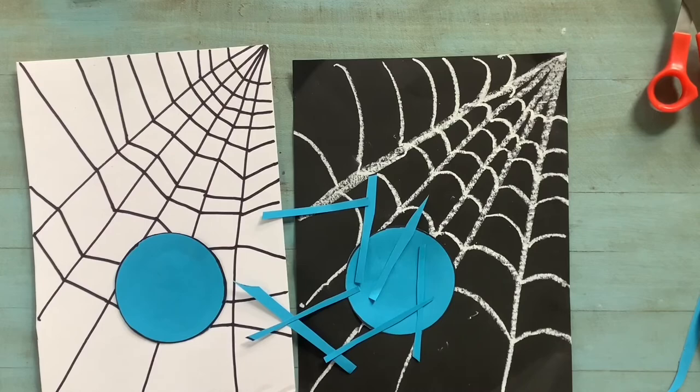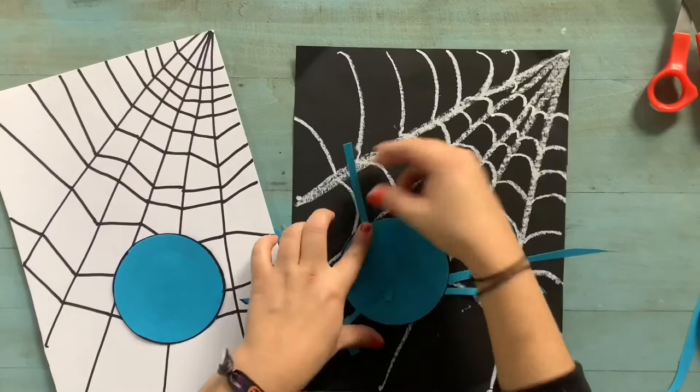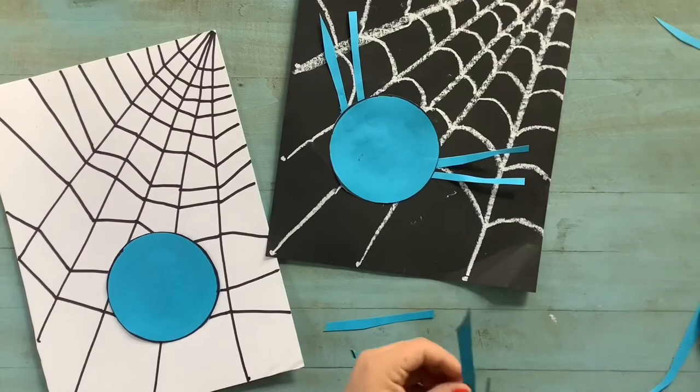please make sure your spider has all eight of his or her legs. You'll notice when I'm gluing down the legs, I just put a little bit of glue on the corner and then I put it underneath the spider's body. I don't need to put glue on the whole thing because as long as there is enough glue on the edge and it's underneath my spider body,